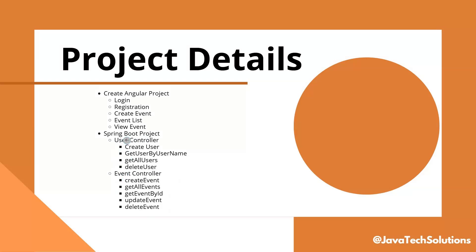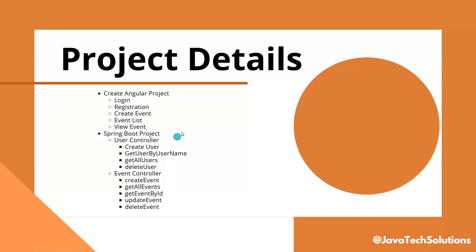We also need two entities for this Spring Boot project: one is the User entity, which will store user details, and another is the Event entity, which will store event-related details. For the Angular project, we need multiple functionalities: login, registration, creating events, viewing events, and an event list where users can see all events at a glance. I am using Angular 18 and the latest stable Spring Boot version.